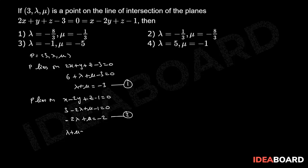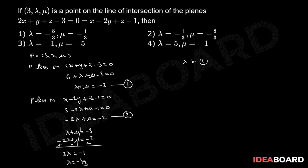Now by solving equations 1 and 2: lambda + mu = -3 and -2*lambda + mu = -2. By subtracting these two equations, mu cancels out, and we get 3*lambda = -1, which implies lambda = -1/3. Substituting lambda into equation 1, we have -1/3 + mu = -3, which implies mu = -8/3.